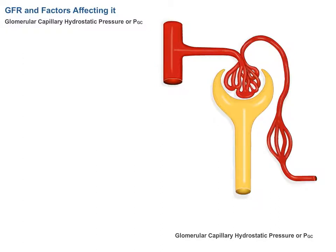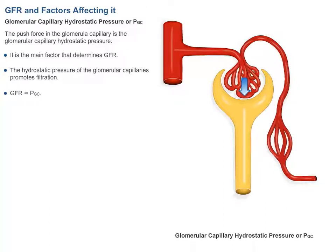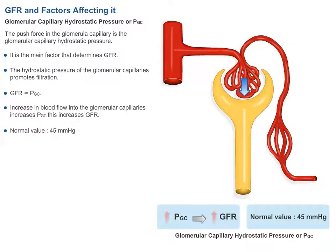Glomerular capillary hydrostatic pressure, or PGC, is the push force in the glomerular capillary. It is the main factor that determines GFR. The hydrostatic pressure of the glomerular capillaries promotes filtration, and GFR is directly proportional to PGC. An increase in blood flow into the glomerular capillaries increases PGC and therefore increases GFR. Normal value is 45 mmHg.